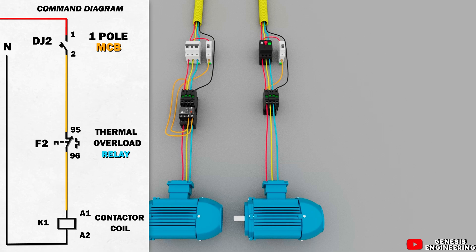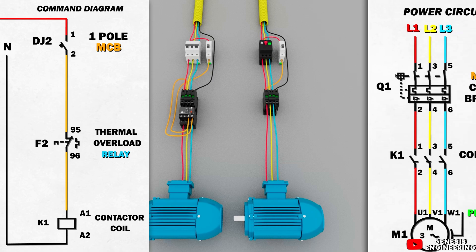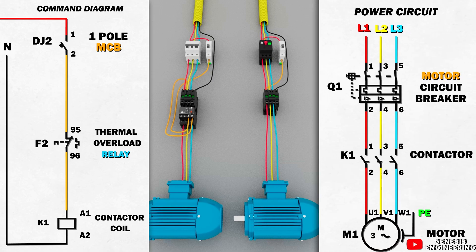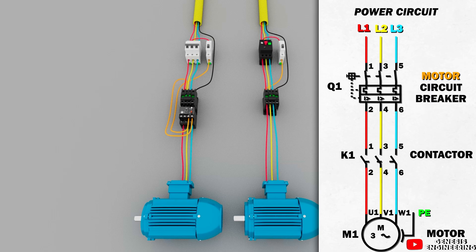When we use the thermal relay to protect the motor, we have indirect protection — the thermal relay does not open the power contacts on overload, so it is necessary to use a contactor. We place the normally closed contact 95 and 96 of the thermal relay in series with the contactor coil, and the contactor opens the power contacts to switch off the motor. With the motor circuit breaker the protection is direct, because the motor circuit breaker's power contacts will open directly to turn off the motor in case of overload.